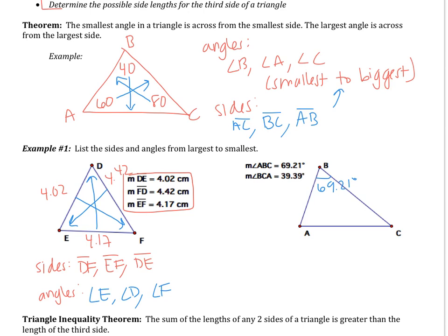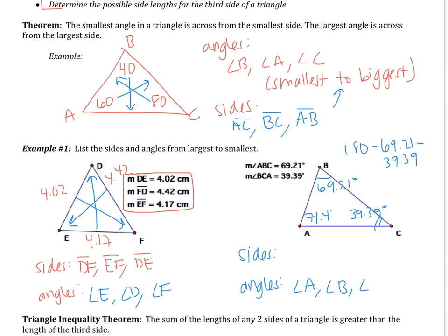Angle BCA is 39.39 degrees. We need to list our sides and angles from smallest to largest. Since we're missing an angle, the first thing to do is find it: 180 minus 69.21 minus 39.39 gives the last angle as 71.4 degrees. So the biggest angle is angle A, the medium angle is angle B, and the smallest angle is angle C.